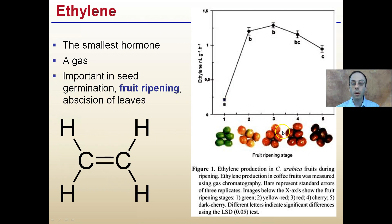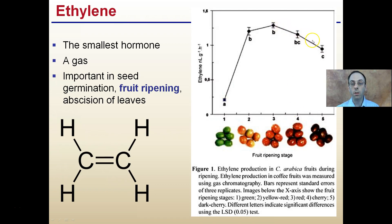Looking at our fruit ripening stage and ethylene concentrations: in the green or unripe stage, ethylene production is quite low. Then we notice a large spike as we get closer to ripening. At peak ripeness, a high amount of ethylene is produced, with a slow decrease over time. The ethylene level is much higher when the fruit is ripe than when it is unripe.